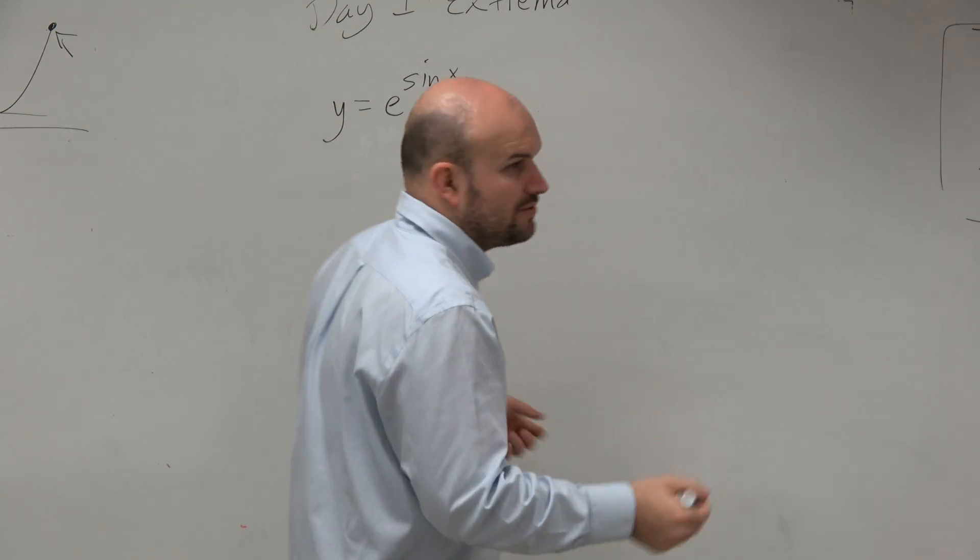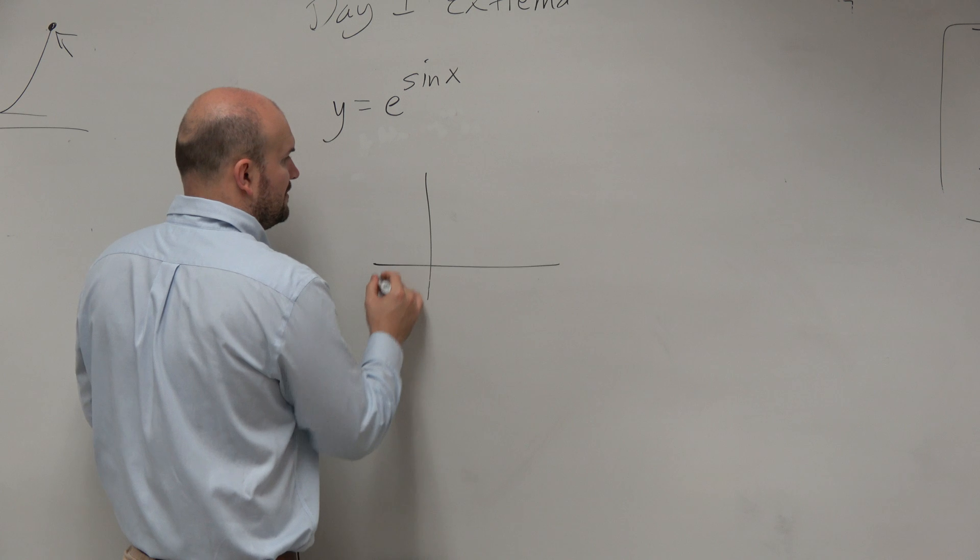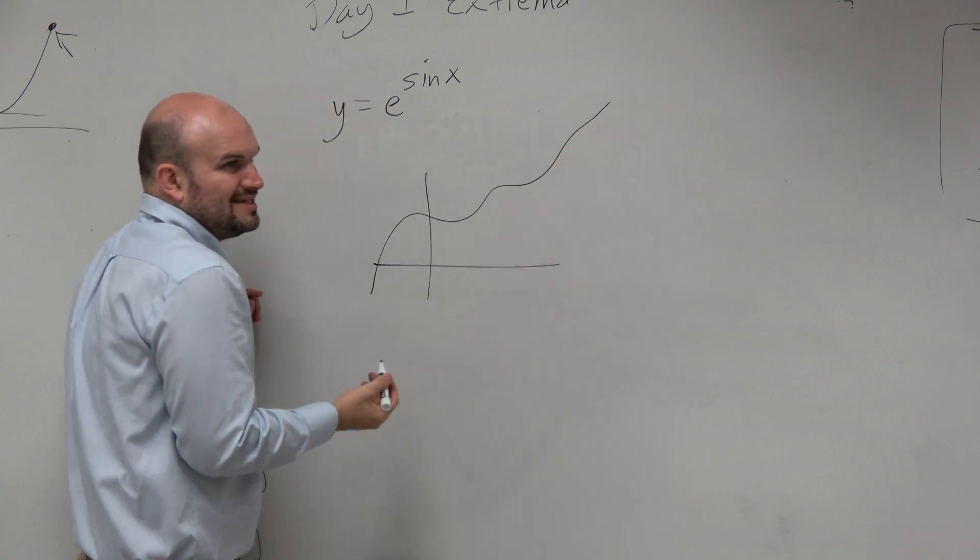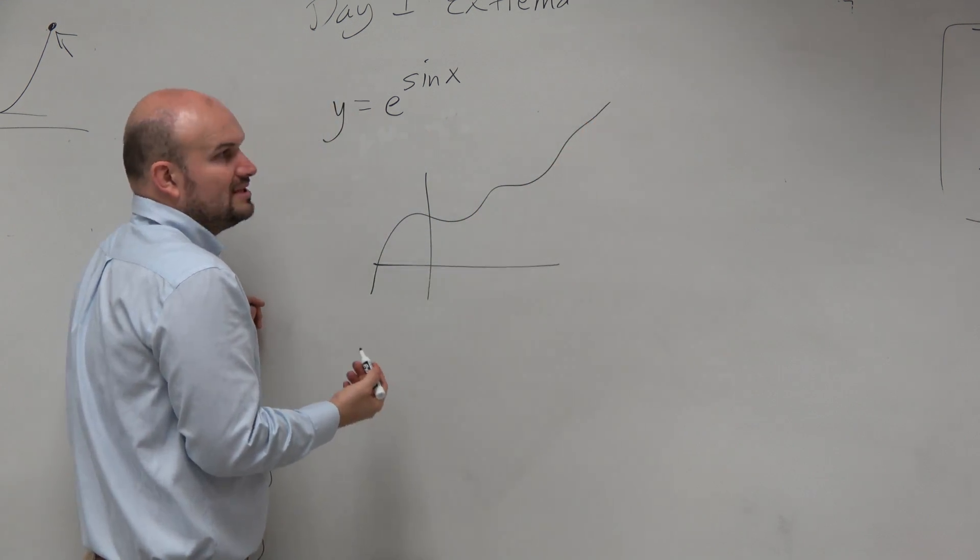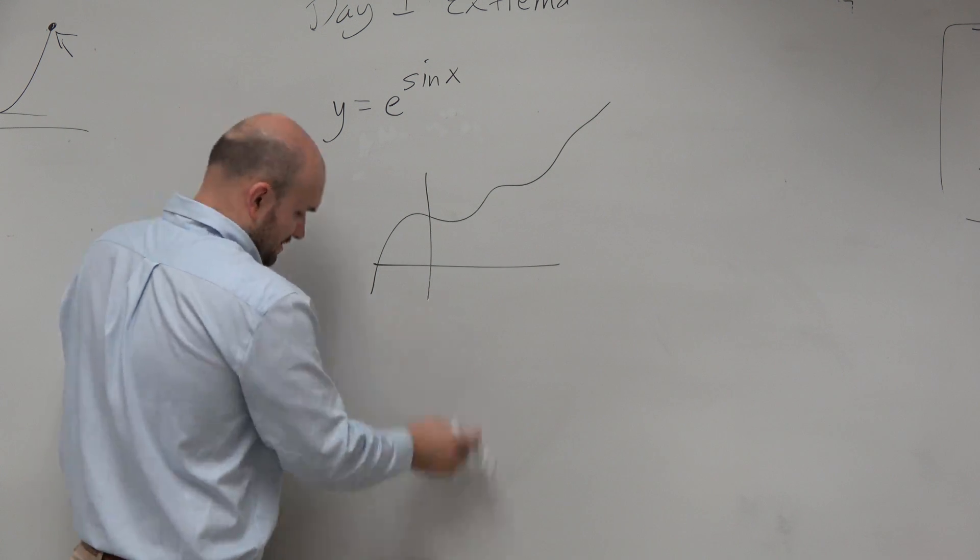So who knows what this graph looks like? But if you have this graph and it's going like this, you can't say what the maximum is. Right? We don't know what the max or the min is. I have no idea what the graph looks like.